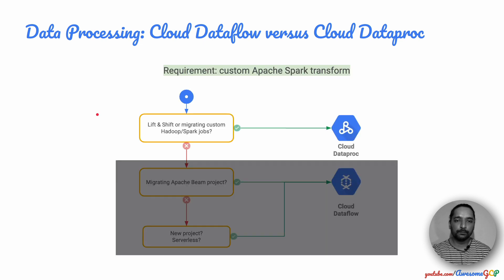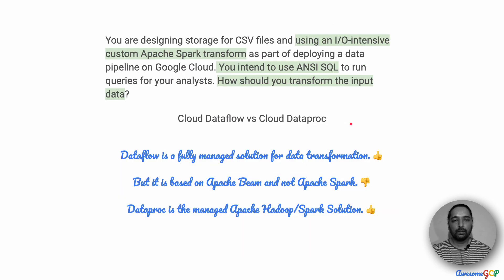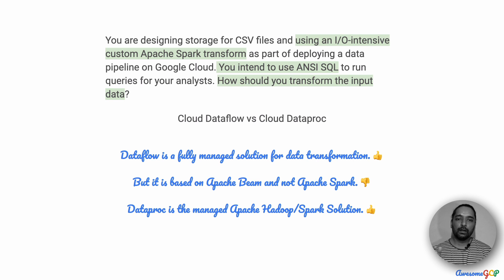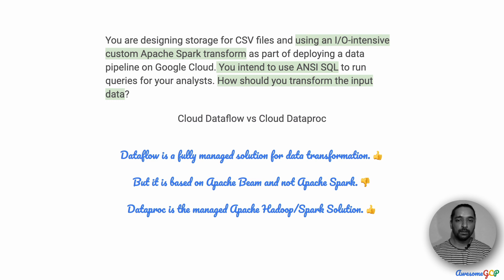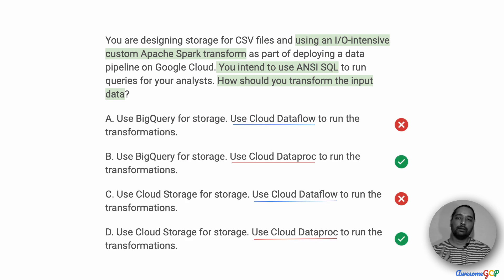Cloud Dataproc would be the managed version of Hadoop or Spark. Since the requirement says we have to use a custom Apache Spark transform, we have to use Cloud Dataproc. To summarize: Dataflow is a fully managed solution for data transformation, but if you are using Hadoop or Spark and want a managed solution on Google Cloud, then Dataproc would be the best choice. If you want to migrate Apache Beam jobs, then Cloud Dataflow is the right choice. In our case, it is an Apache Spark transform and therefore Cloud Dataproc is the right option, which helps us retain options B and D while eliminating options A and C.